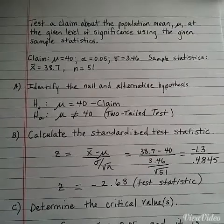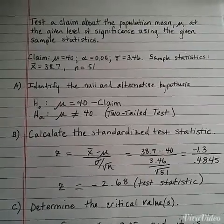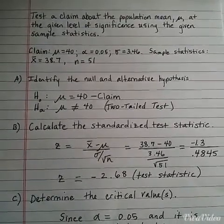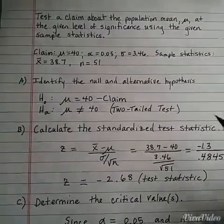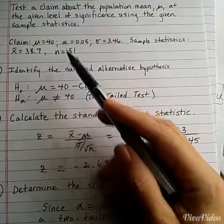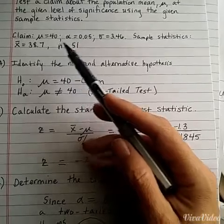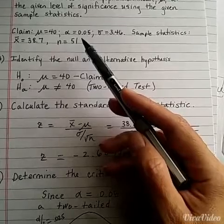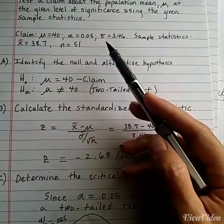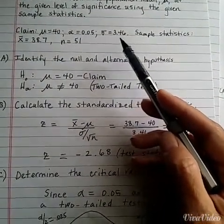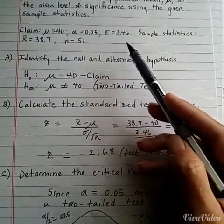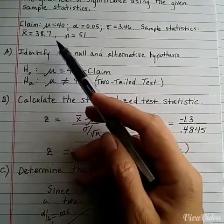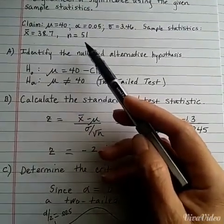In this example, we want to test a claim about the population mean μ at the given level of significance using the given sample statistics. We are given that the claim is μ equals 40, alpha the level of significance is 0.05, sigma the population standard deviation is 3.46, and our sample statistics are x bar equals 38.7 and the sample size is 51.